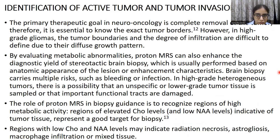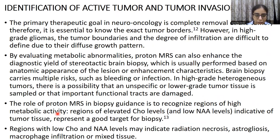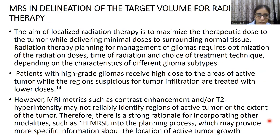MRS also has a role in identification of active tumor and tumor invasion. The goal of neuro-oncology is complete removal of tumor, so knowing the exact tumor borders is very important, which becomes very difficult in high-grade tumors. The role of MRS in biopsy guidance is to recognize regions of high metabolic activity — that is, regions with elevated choline levels and low NAA levels, which are indicative of tumor tissue — representing a good target for biopsy. Regions with low metabolite levels may indicate radiation necrosis, gliosis, or microscopic infiltration. MRS also aids in delineation of target volume for radiation therapy, and patients with high-grade gliomas can receive high doses to areas of active tumor, while regions suspicious for infiltration are treated with lower doses.